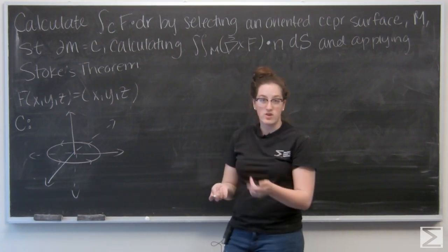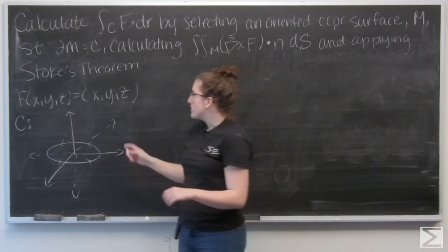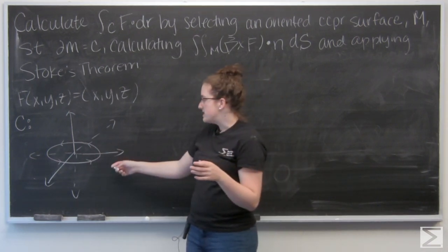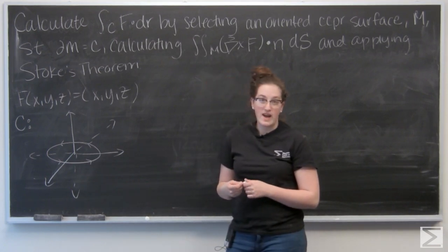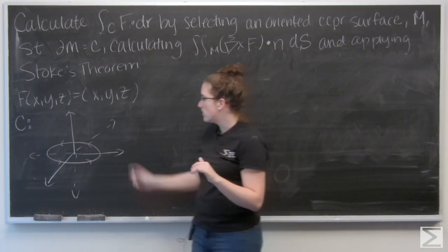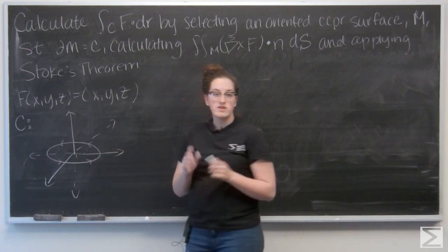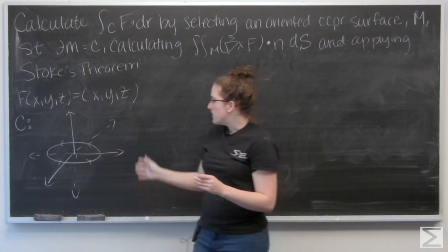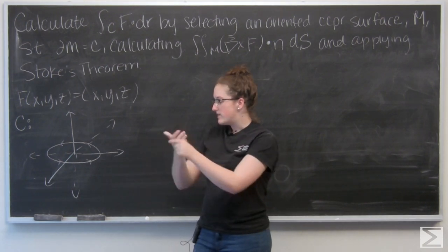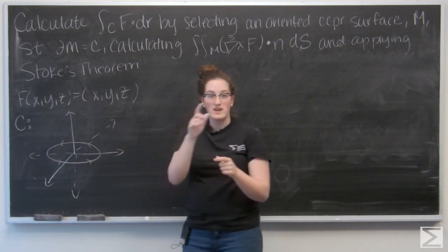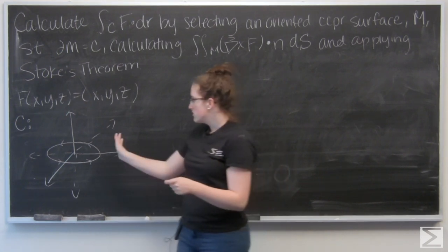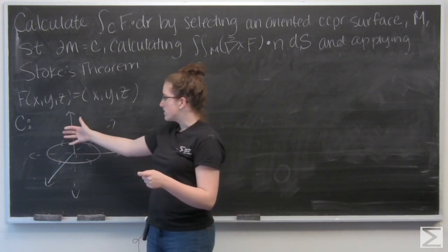As long as they're oriented the right way. When I find a surface M, I need its boundary to be this curve C, which is the circle of radius 5 centered at the origin where z equals 0, oriented counterclockwise so that it fits the right-hand rule. So basically my thumb is going to be the orientation and my fingers will curl in the direction that the circle is oriented in. So the circle is oriented counterclockwise, so my thumb points up.